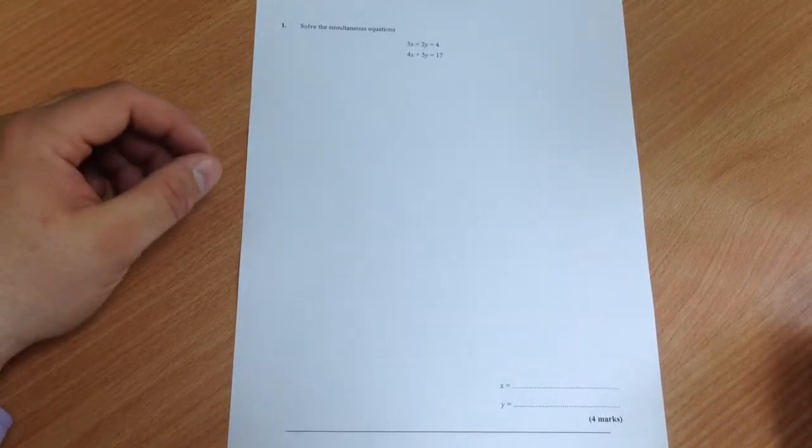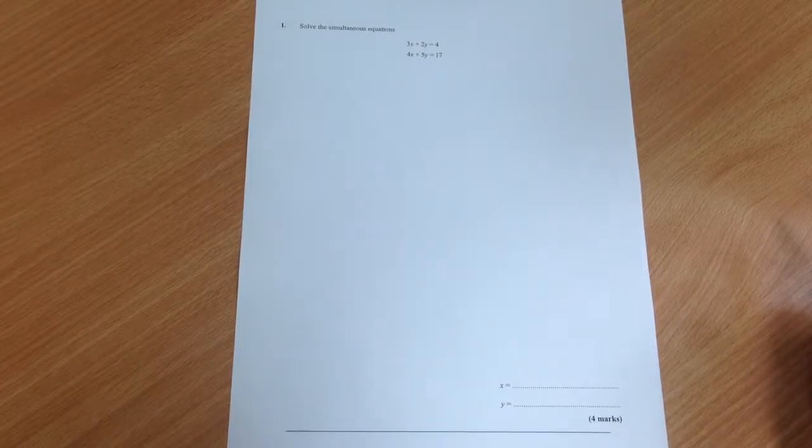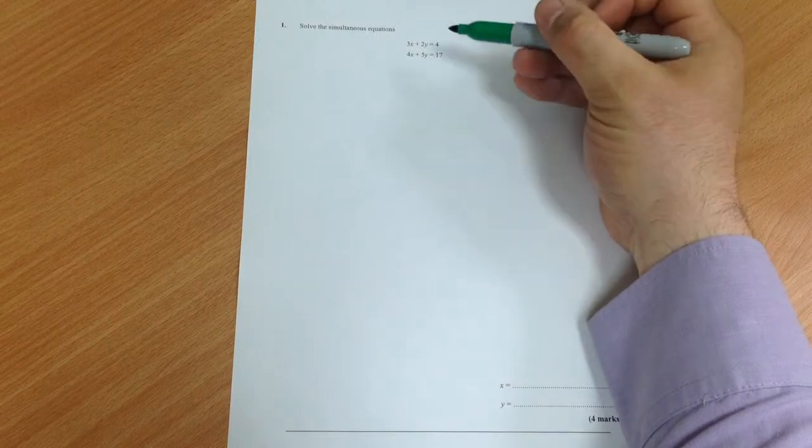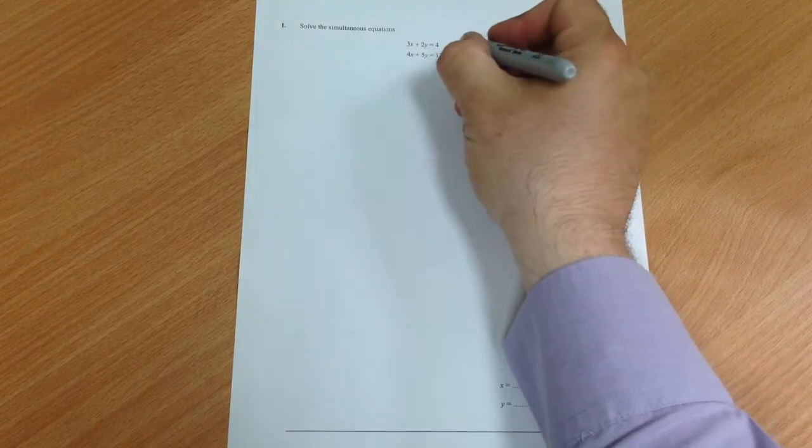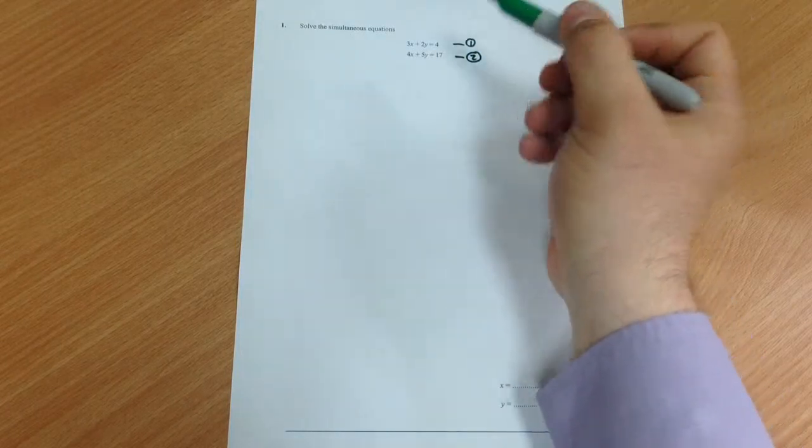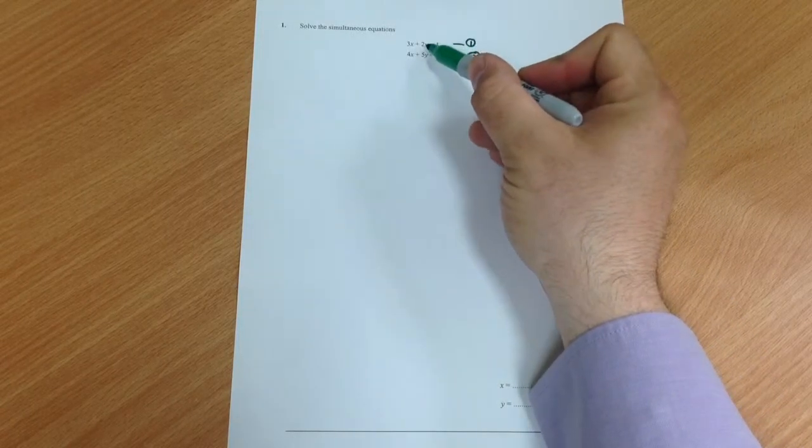Ok, we're going to look at solving this simultaneous equations question and the approach we're going to use is to make the y's the same so we can get rid of the y's and find x. I'm going to call that equation 1 and that equation 2. Now to make the y's the same you need to times that 2y by 5 and that 5y by 2.